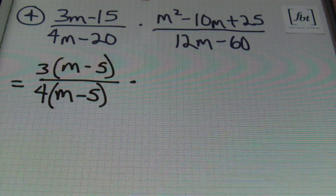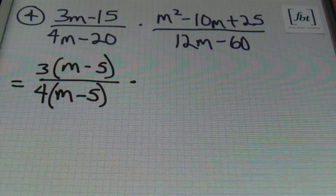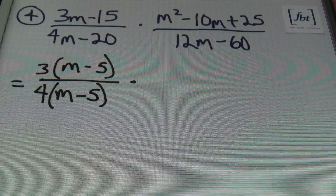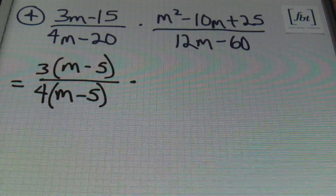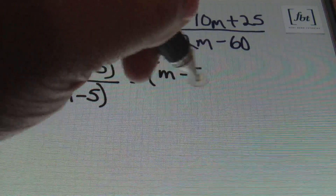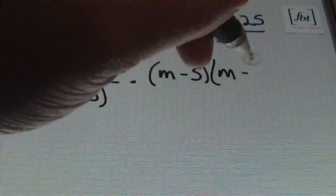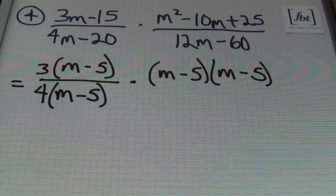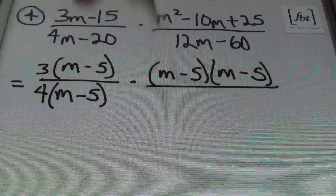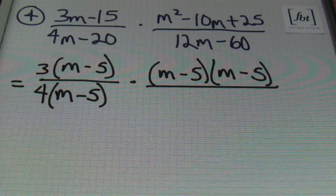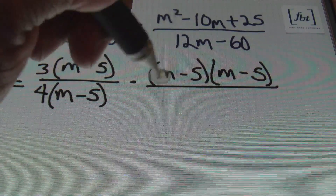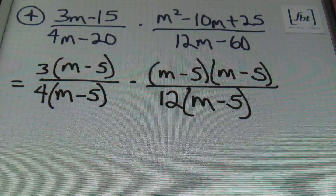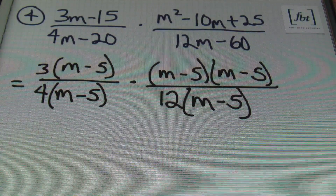In the numerator of the second fraction, I have a quadratic trinomial. Factoring that, I'm looking for two numbers that multiply to give me 25 and add to give me 10 — that's 5 and 5. So I'll end up with m minus 5 times m minus 5. I could simplify that as m minus 5 squared, but in a problem like this I'll leave it expanded. In the denominator, I can factor out a 12, leaving m minus 5.